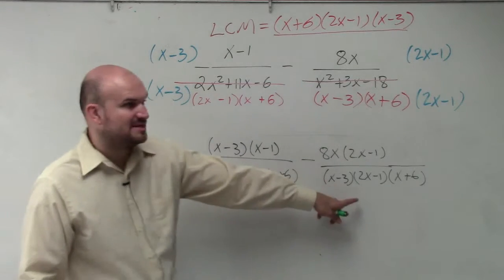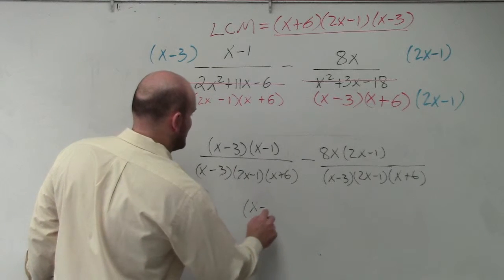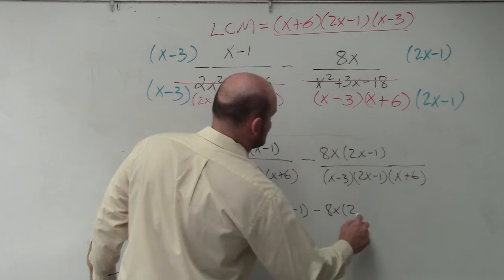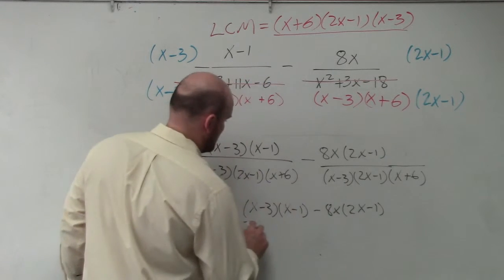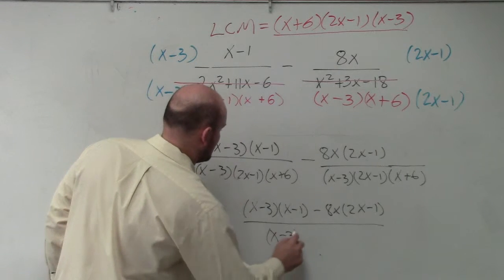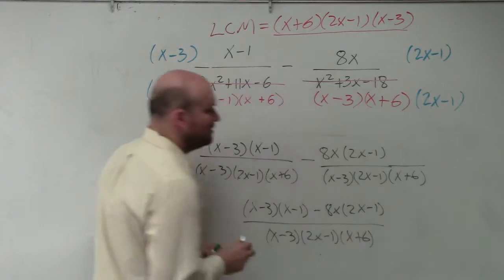Now, since they have the same denominators, I can just rewrite this as 1. So this would be x minus 3 times x minus 1 minus 8x times 2x minus 1 all over x minus 3 times 2x minus 1 times x plus 6.